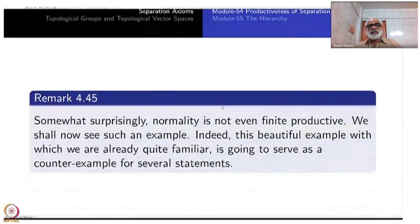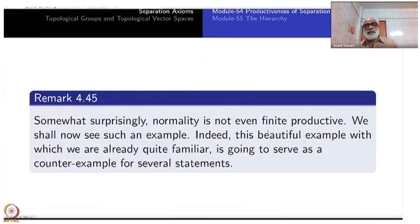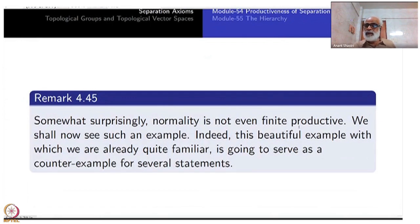Somewhat surprisingly, normality — which we tend to think is nearer to regularity — has weird properties. Normality is not even finitely productive. The reason may be that it is not even hereditary: even if X cross Y is normal, it doesn't imply that X or Y is normal. That is a funny thing.